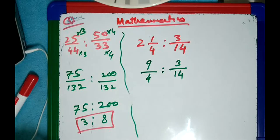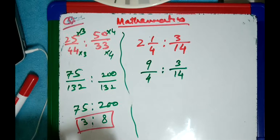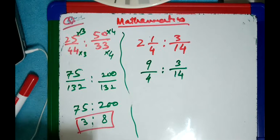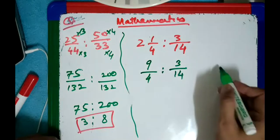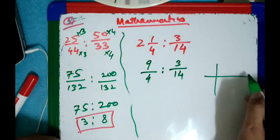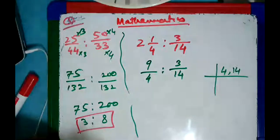First, take the LCM and then do it. You have to take the LCM of 4 and 14. The LCM of 4 and 14 is... wait, what is the LCM of 4 and 14? You're saying 2. How is it 2? I am not asking for HCF — I'm asking for LCM.